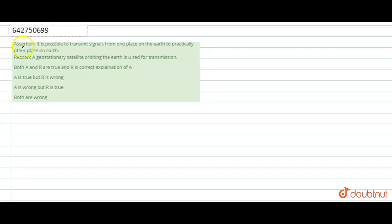Hello students, this is an assertion and reasoning question. The assertion says it is possible to transmit signals from one place on the Earth to practically any other place on the Earth. The reason says a geostationary satellite orbiting the Earth is used for transmission.